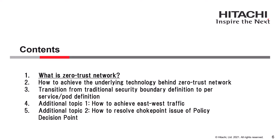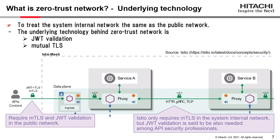What is a zero-trust network? It means treating the system's internal network the same as the public network. This assumes that the implicit trust zone is only inside the service or inside the pod, and all networks, including internal networks, are not safe. The de facto standard of service mesh is Istio, and according to Istio, the underlying technology behind a zero-trust network is JWT validation and mutual TLS. Istio requires mTLS and JWT validation in the public network, and JWT validation in the internal network is also considered necessary among API security professionals.